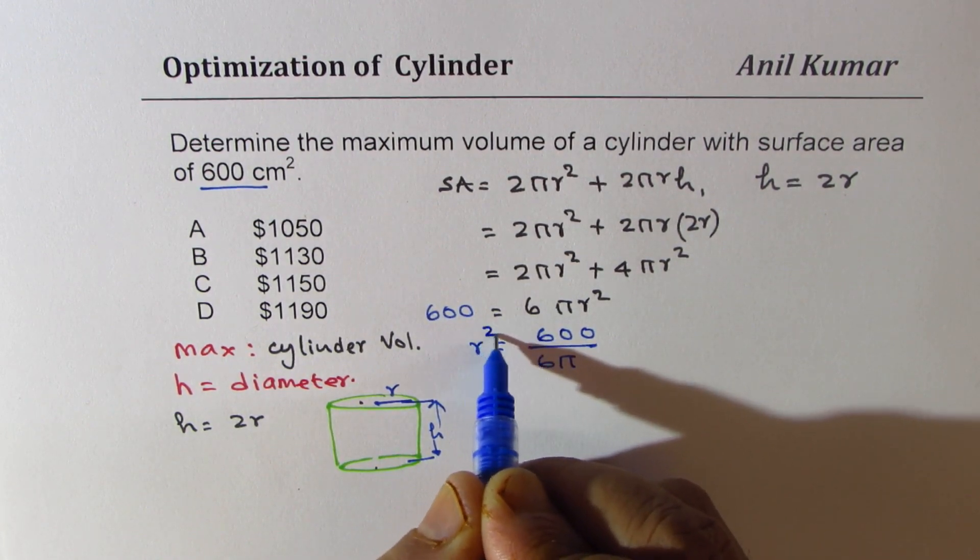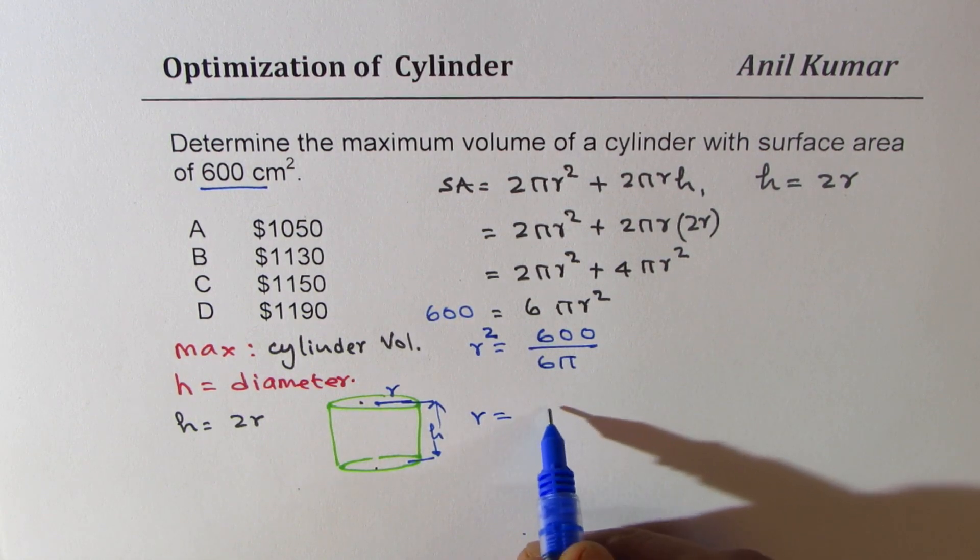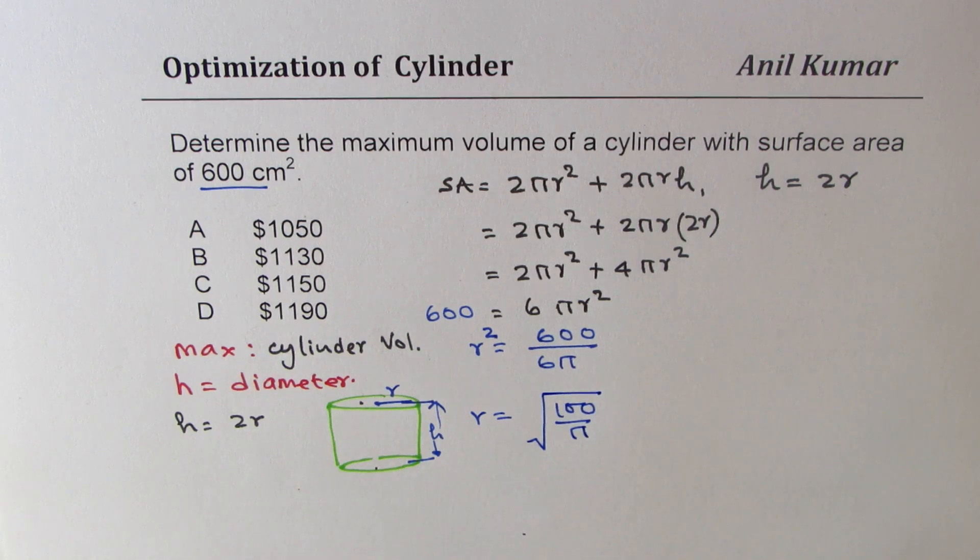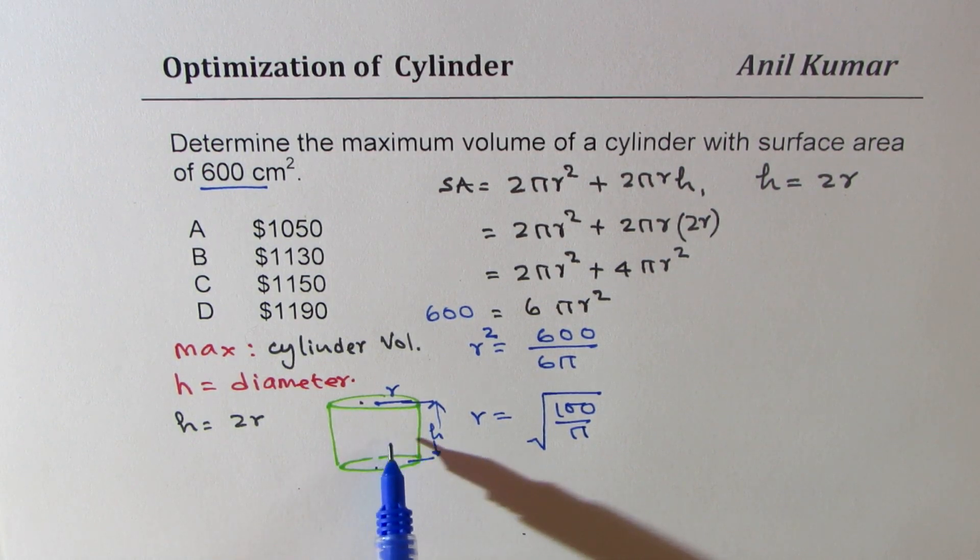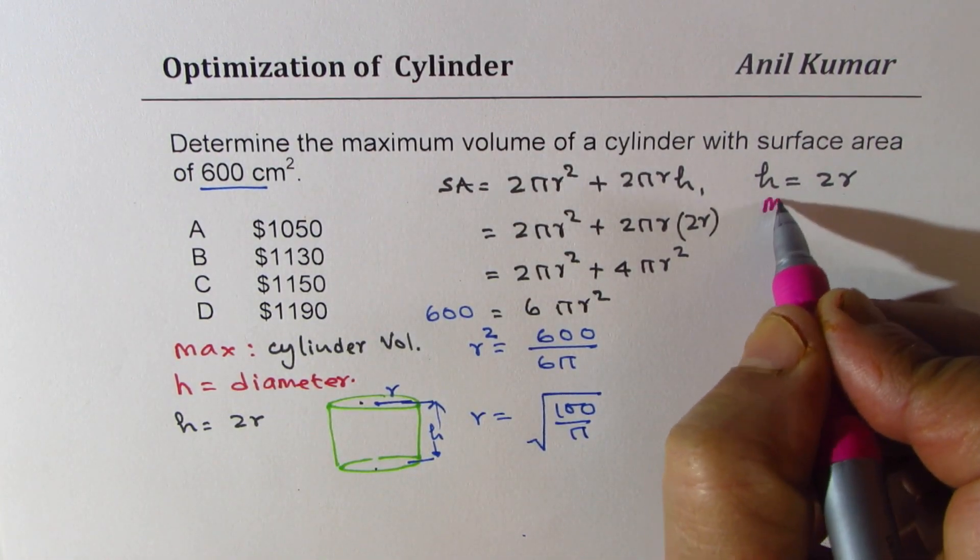Now from here we can solve for r. So r square equals 600 over 6 pi. So r will be equal to, well we can reduce this, 100 over pi square root. So that becomes the radius for this particular cylinder for maximum volume. Height is equal to 2r for maximum volume.